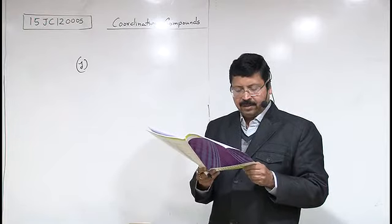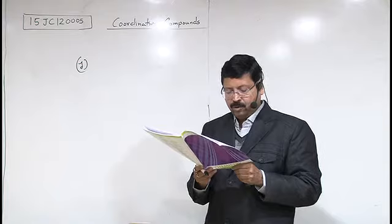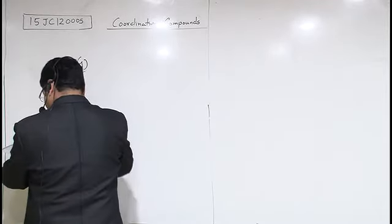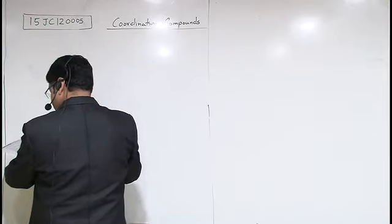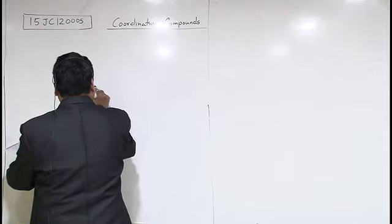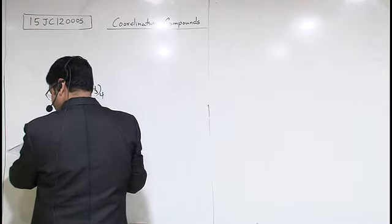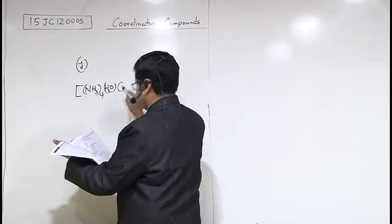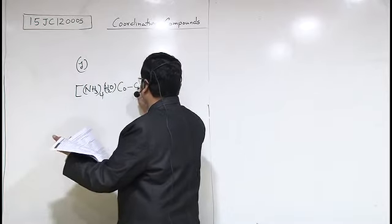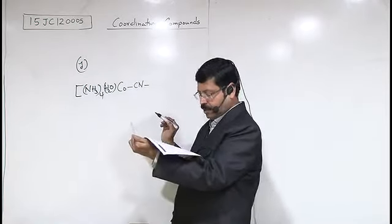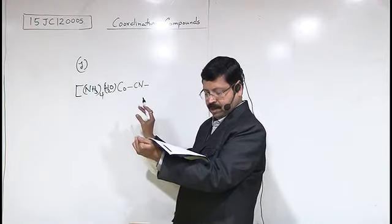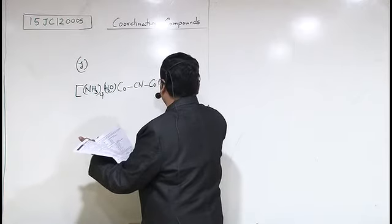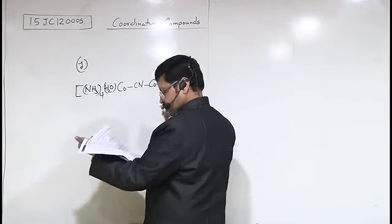The name is tetramine aqua cobalt third dash mu dash cyanido. In this, there's a bridging ligand, one bridging ligand CN minus cyanido. Since mu is there, we realize this. So NH3 hole four, because it's tetramine, then aqua is for water ligand, then cobalt, then cyanido is the bridging ligand. After that, tetramine again, and bromido, and cobalt third.